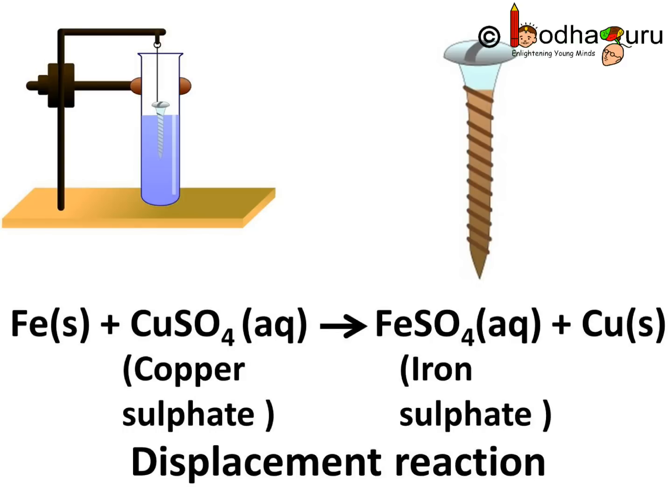So in this reaction: Fe + CuSO4 gives FeSO4 + Cu, where CuSO4 is copper sulfate solution. In this reaction, iron displaced or removed another element — that is copper — from copper sulfate solution and took its place. This reaction is known as a displacement reaction, as copper atoms were displaced by iron atoms.